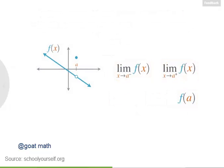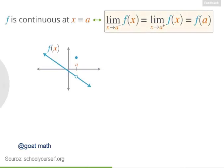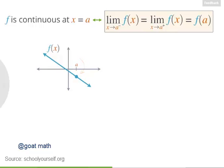For a function f to be continuous when x equals a, these three things must be equal: the left limit as x approaches a, the right limit as x approaches a, and these both must equal f of a, the value of the function when x equals a. For this function, if f of a equaled these two limits, then this point would be down here and the function would be continuous.